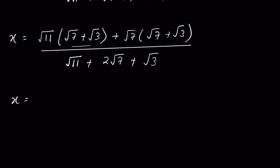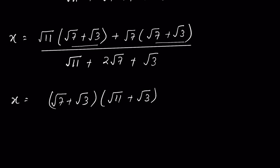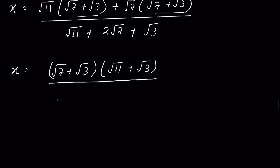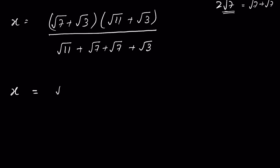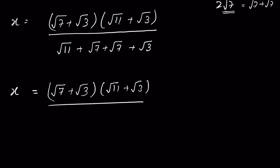Now (√7 + √3) is the common factor in the numerator. We factor it out, leaving (√11 + √7) remaining. Note that 2√7 equals √7 + √7, so the denominator can be written as (√7 + √3) + (√11 + √7). So x equals (√7 + √3)(√11 + √7) upon (√7 + √3) + (√11 + √7).